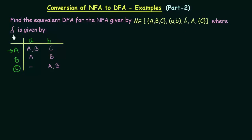The transition function δ is defined by the table shown. We have 3 states A, B, C. State A on getting input A goes to both A and B. A on getting input B goes to C. B on getting A goes to A, and B on getting input B stays in B. C on getting input A goes nowhere — it has no move, it goes to φ. And C on getting input B goes to states A and B. A is the initial state, shown by the arrow, and C is the final state, shown by the double circle.